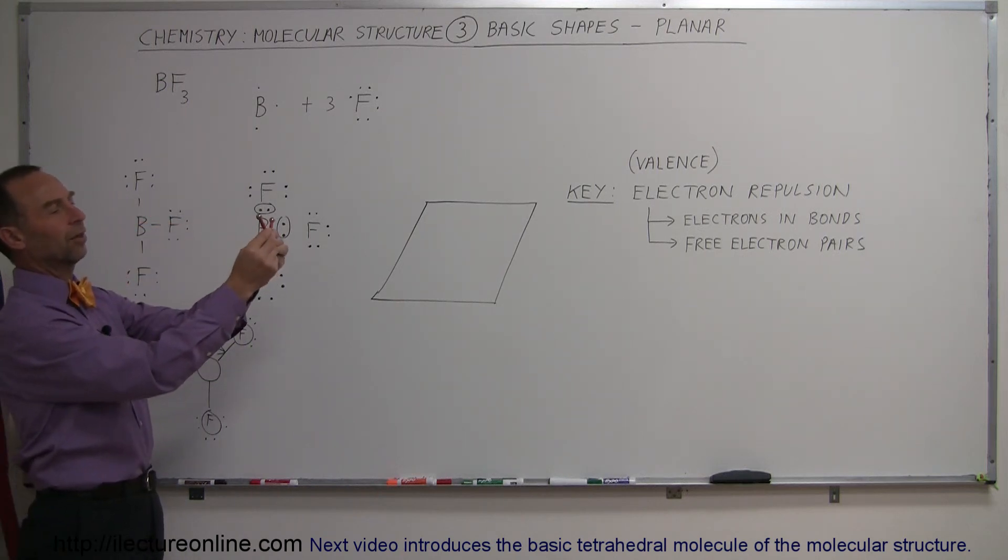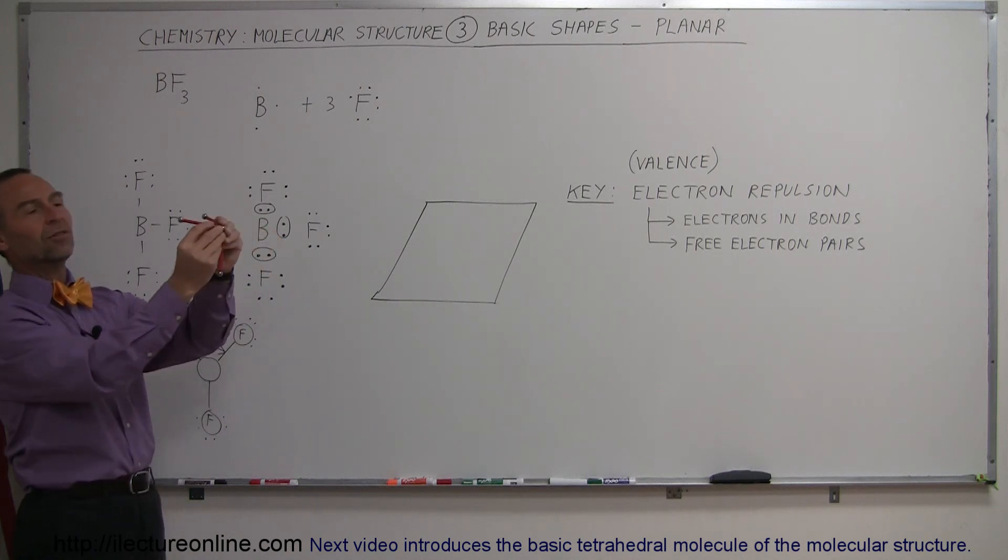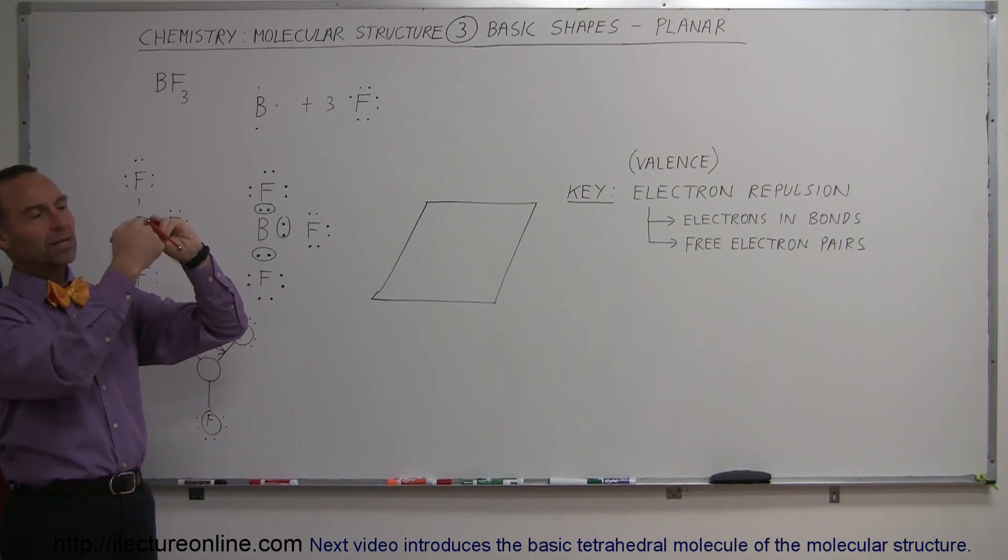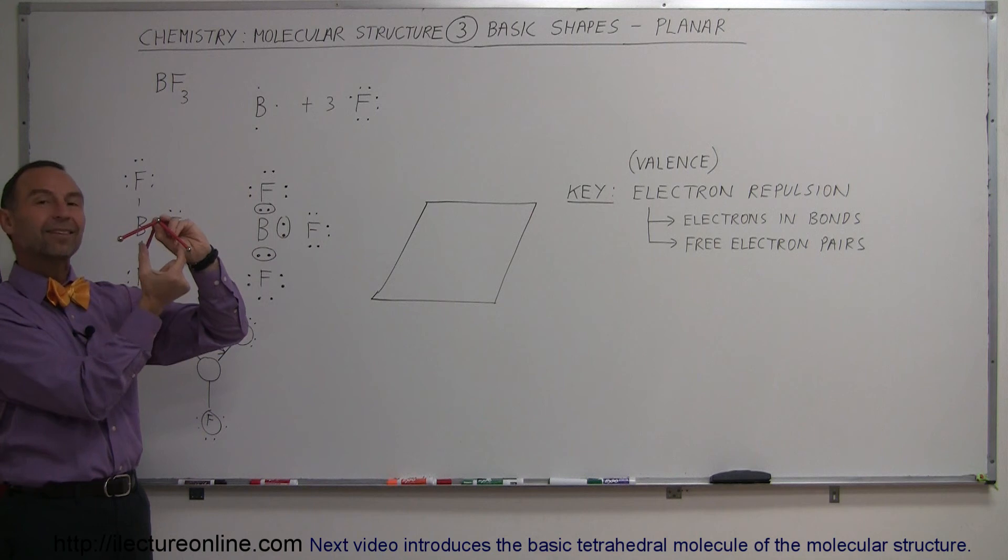So if I draw, if I show you like this, say well why can't it look like this instead? Well when it looks like this instead, what you have now is the angle between these connecting or actually the bonding electrons is now less than 120 degrees.